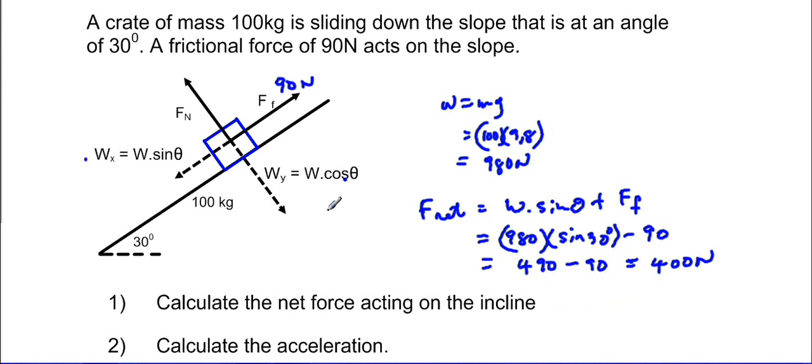So the net force acting on the incline will be a force of 400 newtons pulling the block downwards parallel to the slope.